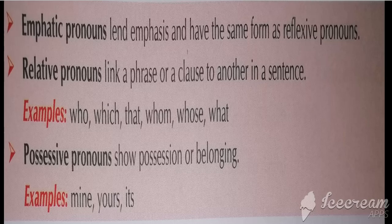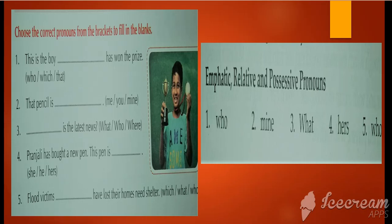Let's see the exercise. You have to choose the correct pronouns from the bracket to fill in the blanks. First: 'This is the boy — has won the prize.' From the choices who, which, and that — 'who' will come. So the answer is: 'This is the boy who has won the prize.'